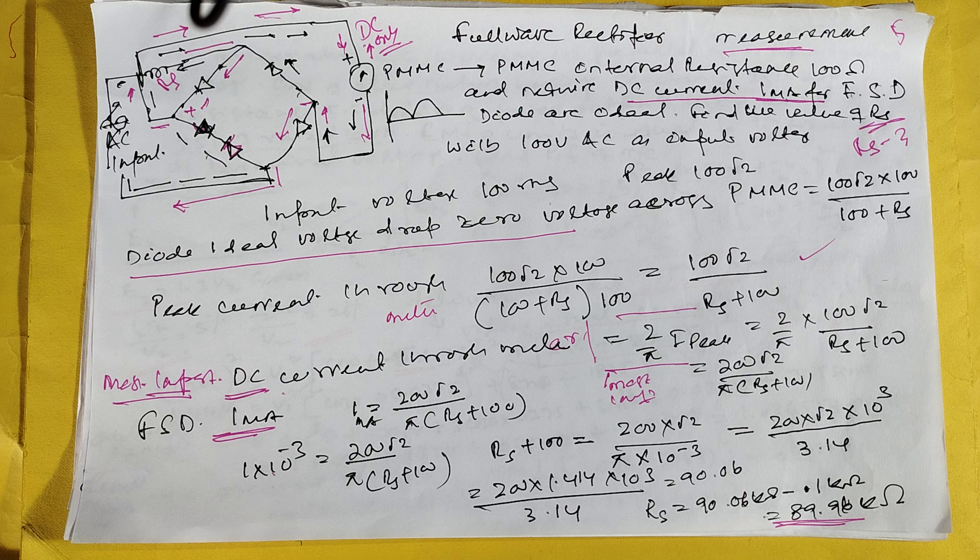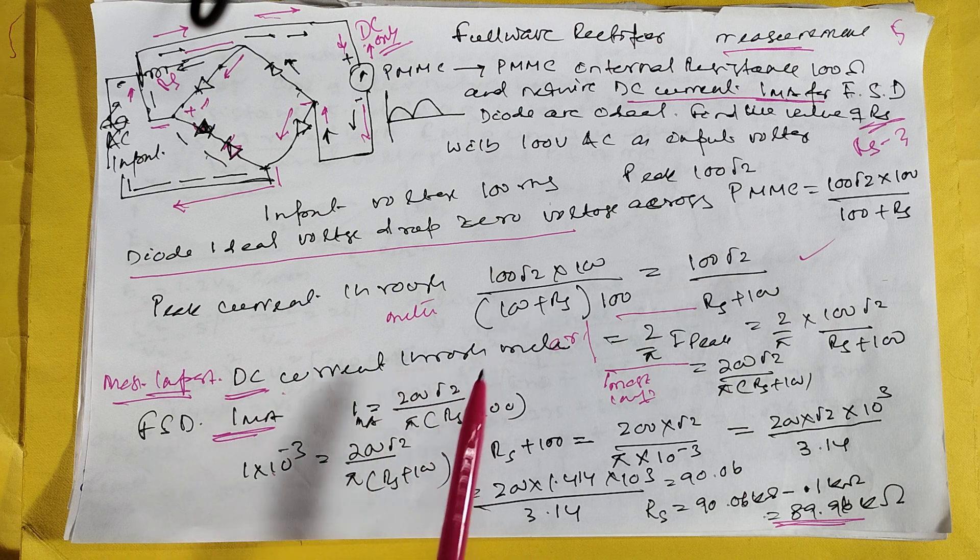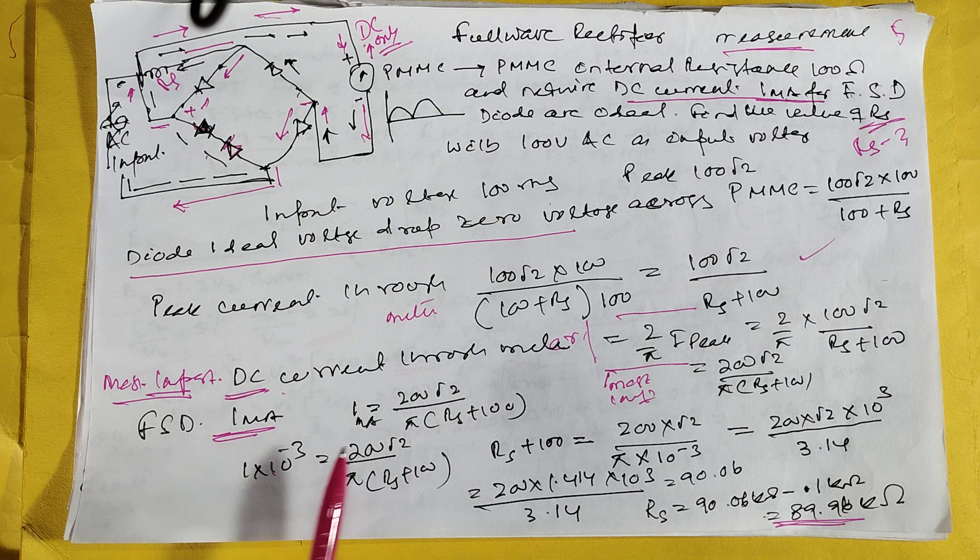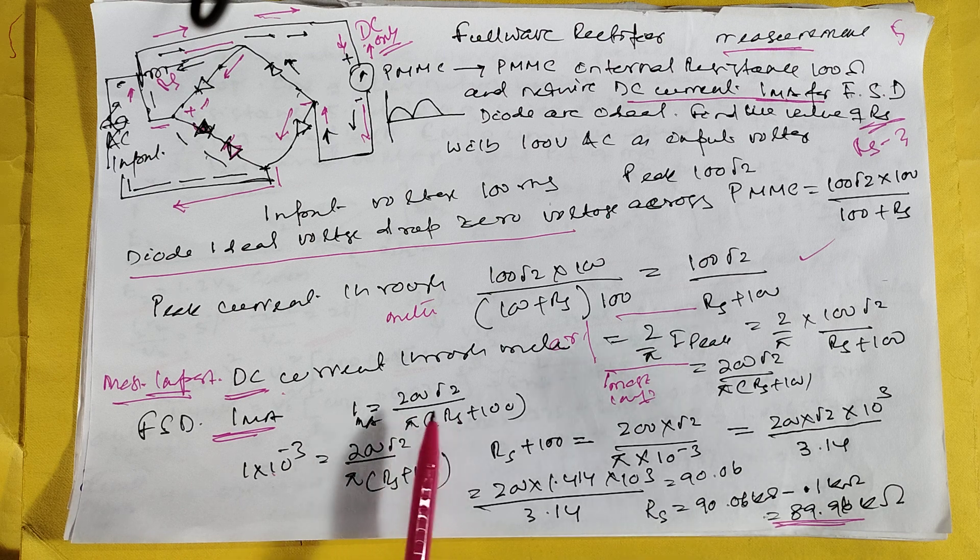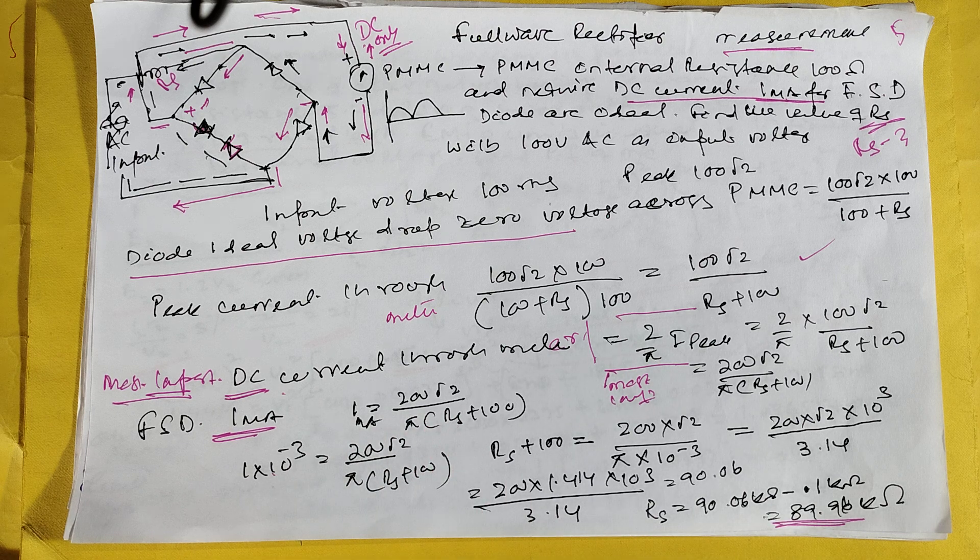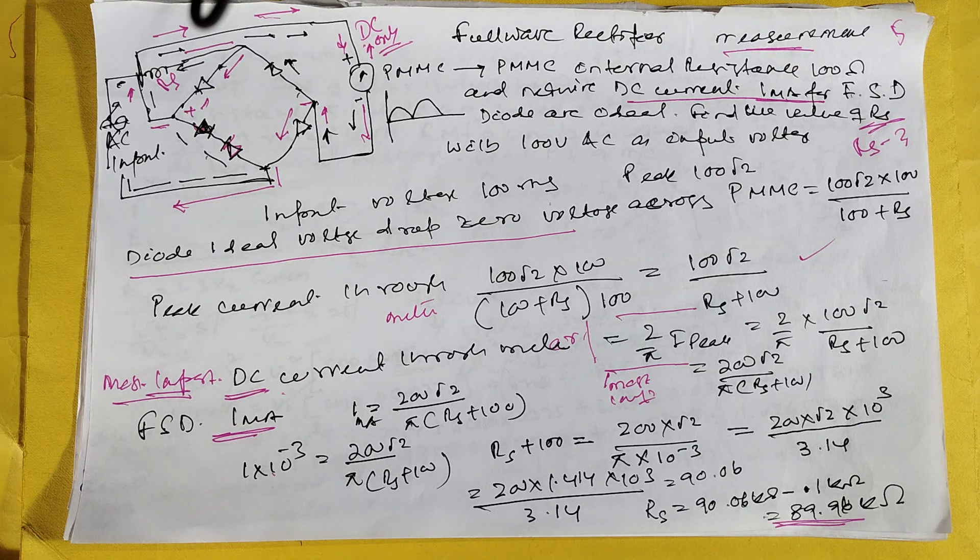Then find the DC current, and this is the 1 milliampere. What is the formula? This is the formula. If you solve it, Rs is coming 89.96 kilo ohm.